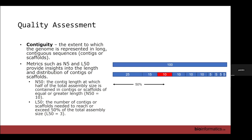Now that we've reviewed methods of generating contigs, we can move on to quality assessment. Not all assemblies are good assemblies, so we need metrics to assess whether we have a good assembly. There are three aspects to quality assessment for genome assemblies: contiguity, completeness, and accuracy or correctness.